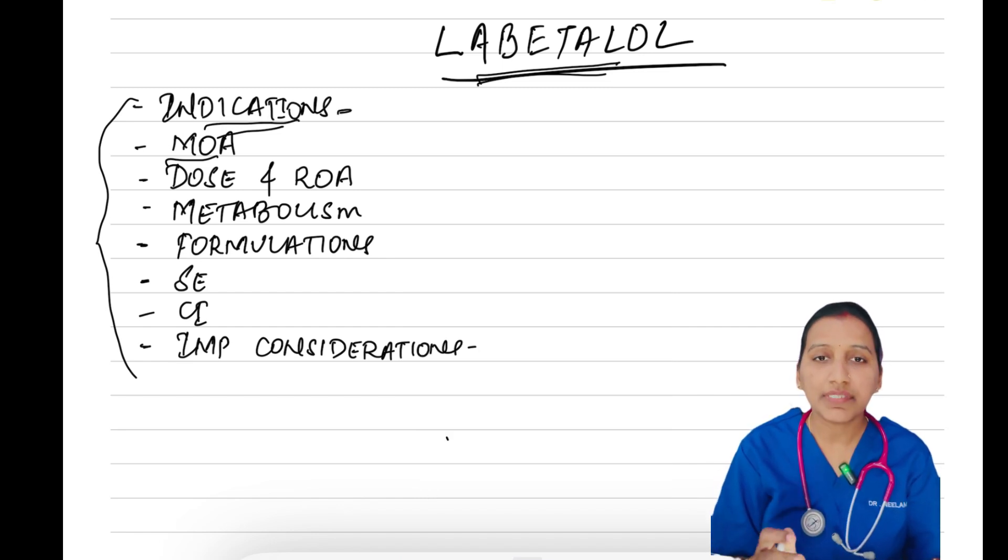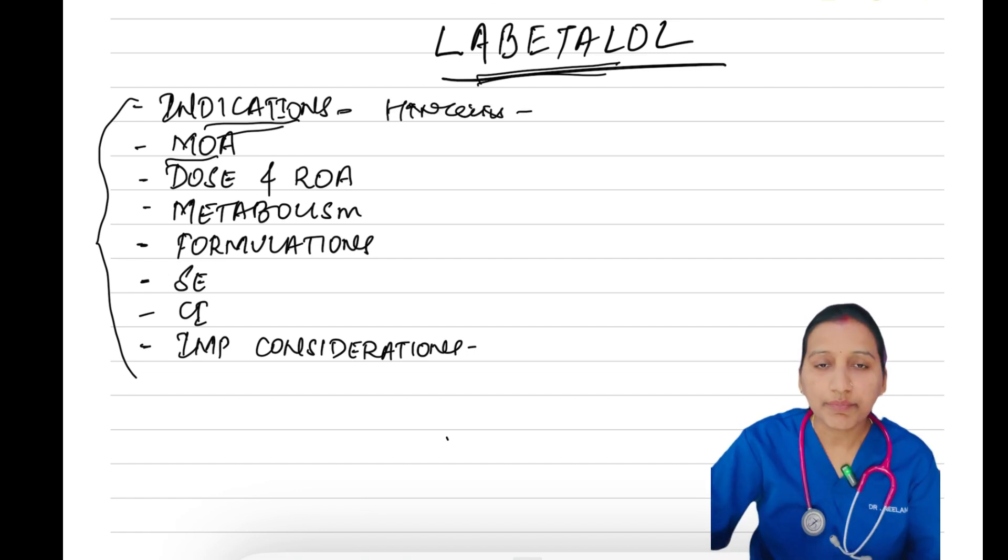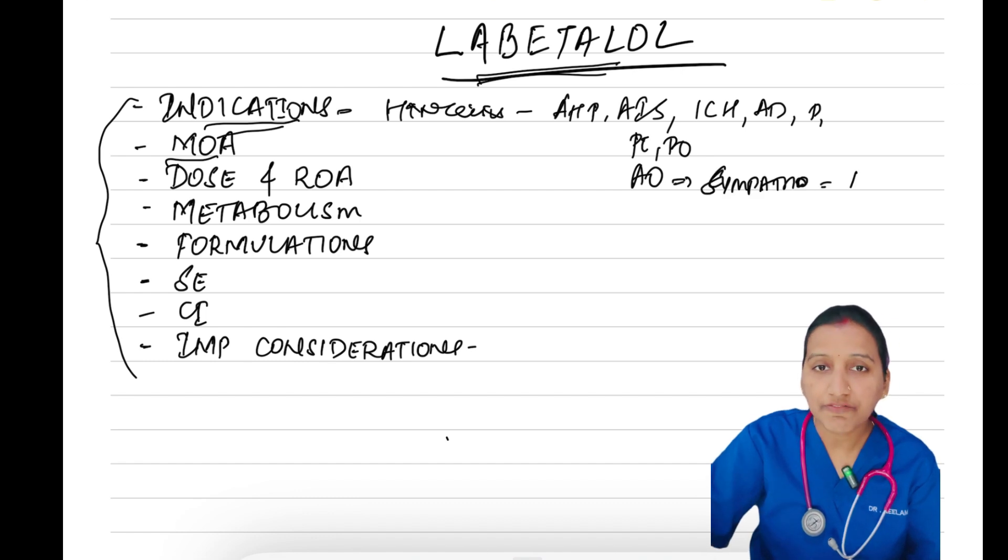First, starting with indications. In the emergency room, Labetalol is usually reserved for acute management of hypertensive crisis, including acute hypertension of pregnancy, hypertension associated with acute ischemic stroke, intracranial hemorrhage, aortic dissection, and pheochromocytoma-associated hypertension. It's also considered for acute hypertension peri and postoperatively, and for treatment of acute overdose caused by sympathomimetics like amphetamine, methamphetamine, and cocaine.